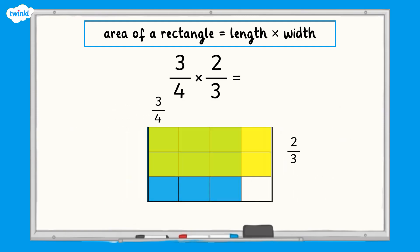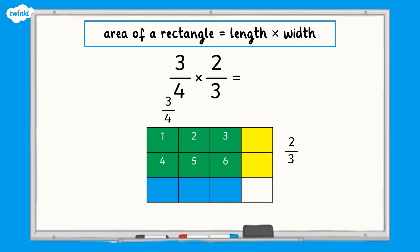When we combine these to represent two thirds multiplied by three quarters, the area shaded green is the area representing both the length, three quarters, and the width, two thirds. In our model, there are twelve equal sections in total and six of the sections are shaded green, so six twelfths of the model is green. The sections shaded green represent the answer to our question as this is where the two diagrams overlap. This means that three quarters of the rectangle multiplied by two thirds of the rectangle equals six twelfths of the rectangle.